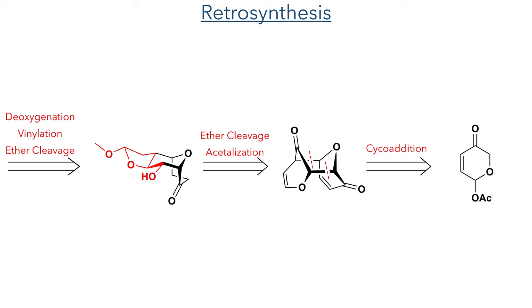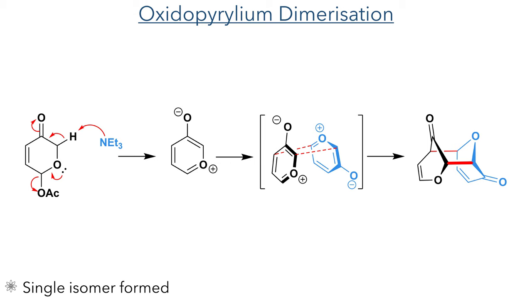So let's start by looking at this cycloaddition. The synthesis started by reacting a keto-dihydropyrane acetate with triethylamine. This deprotonates the alpha-position to generate an enolate and the acetate group is eliminated to generate an oxido-pyrilium species. This then undergoes a regio-specific cycloaddition to form the dimer as a single isomer, with the selectivity arising from the electrostatic interactions between the oxonium and oxido-moieties.